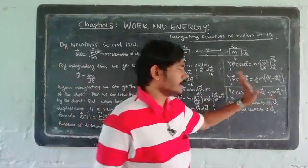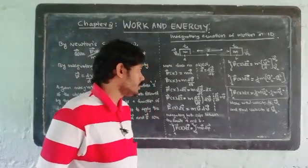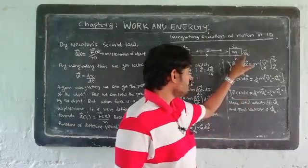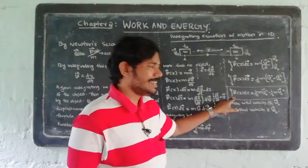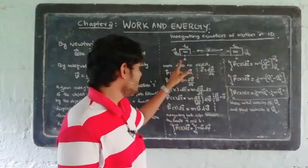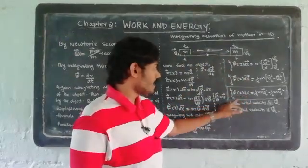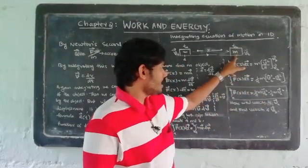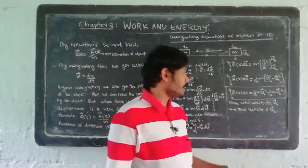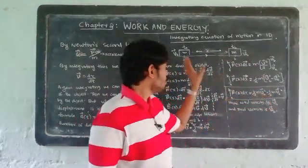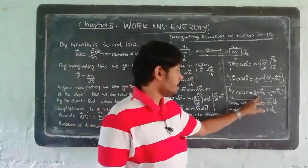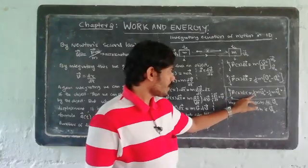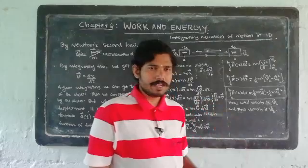This is the final result. The left-hand side — force times displacement integrated — is work done. Half m v_b squared is the final kinetic energy, and half m v_a squared is the initial kinetic energy. So work done equals the change in kinetic energy: final kinetic energy minus initial kinetic energy. This is the Work-Energy Theorem.